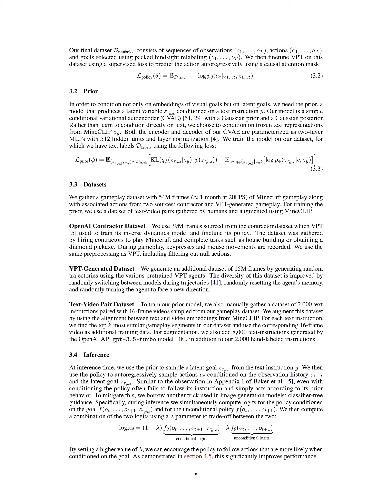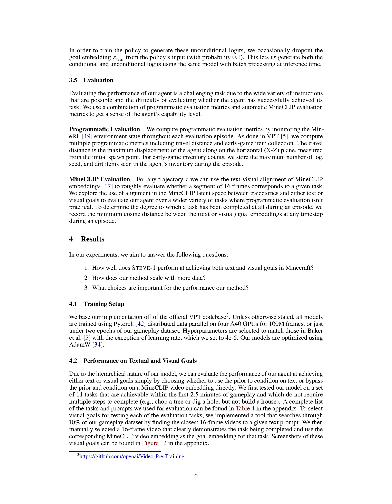Assessing the effectiveness of our AI agent is a complex task due to the broad range of possible instructions and the challenge of determining whether the agent has successfully completed its task. We use a mix of programmatic evaluation metrics and automatic MineClip evaluation metrics. In terms of programmatic evaluation, we track the state of the MineRL environment during each evaluation episode, calculating metrics including the distance traveled and the collection of early game items such as logs, seeds, and dirt. For the MineClip evaluation, we use the text-visual alignment of MineClip embeddings to roughly assess whether a 16-frame segment corresponds to a specific task.